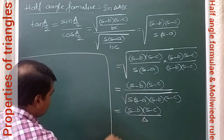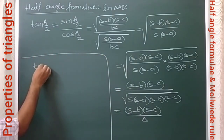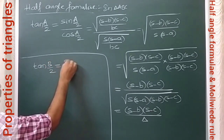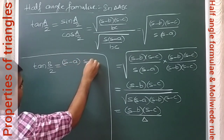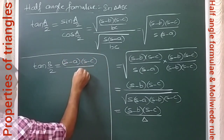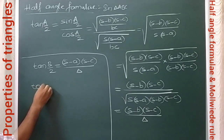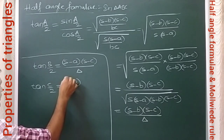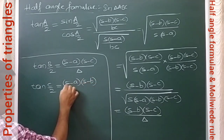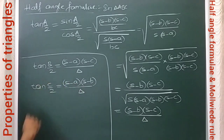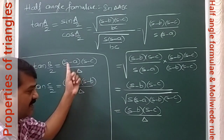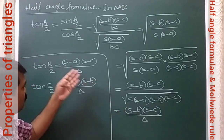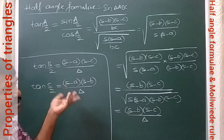Similarly, tan(B/2) = (s − a)(s − c) / Δ, and tan(C/2) = (s − a)(s − b) / Δ. These are the formulas in terms of Δ. By reciprocating these, we get cot(A/2), cot(B/2), and cot(C/2).